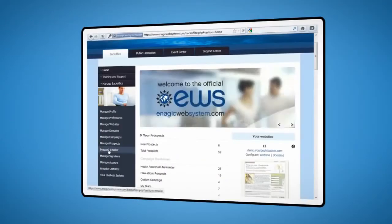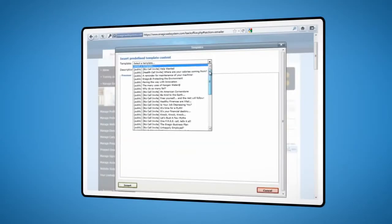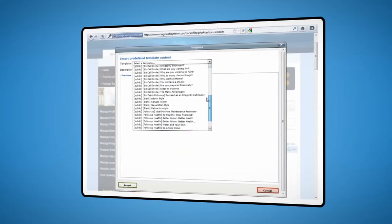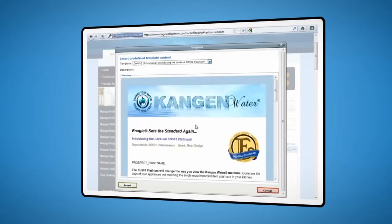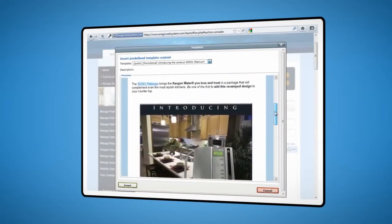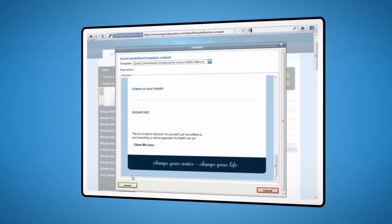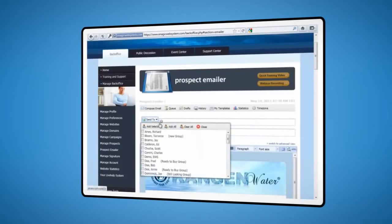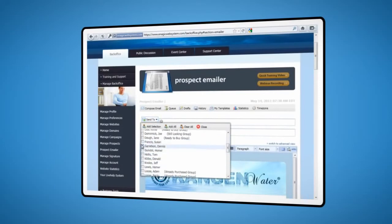First, let's take a look at emailing. With EWS, you get access to a huge database of customizable email templates, newsletters, flyers and more that are pre-written and ready to send. With just a few clicks, you can send a personalized email to as many people as you wish.